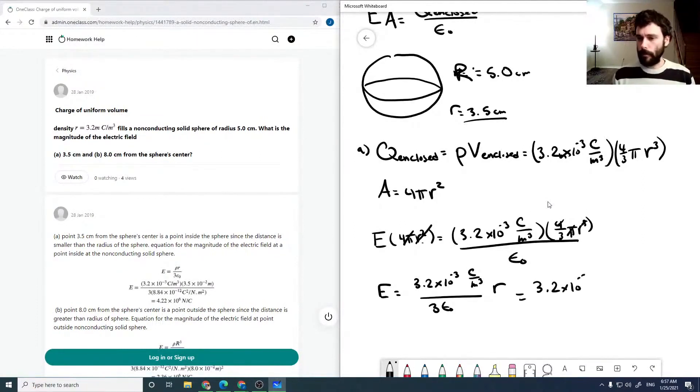We can plug in our r value, which is 0.035 meters, over 3 times epsilon naught, which is 8.8542 times 10 to the minus 12 coulombs squared per newton meter squared. We can see that one of the coulombs will cancel.